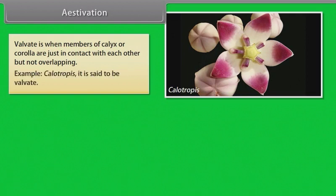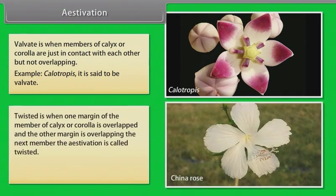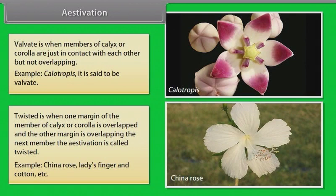Twisted estivation is when one margin of the member of calyx or corolla is overlapped and the other margin is overlapping the next member. The estivation is called twisted. Example: China rose, lady's finger, and cotton.